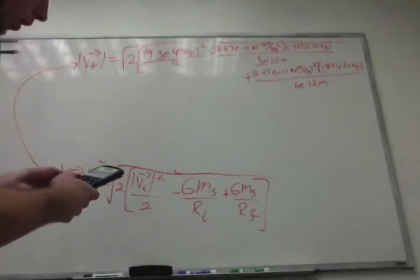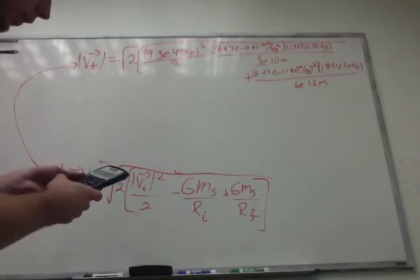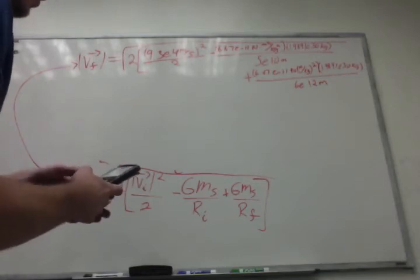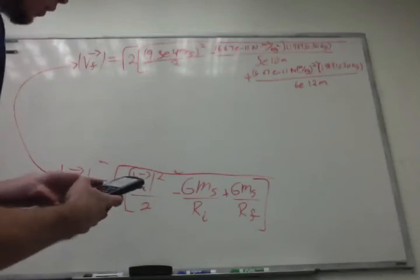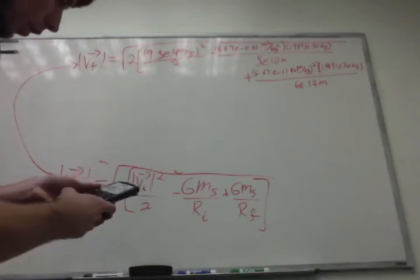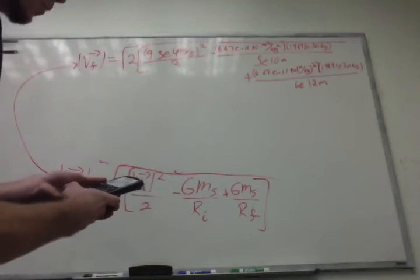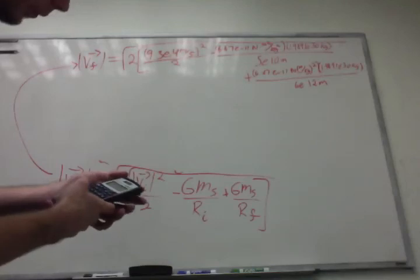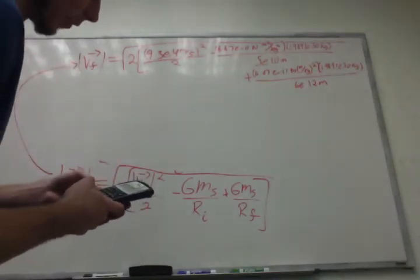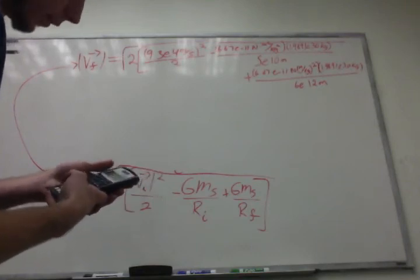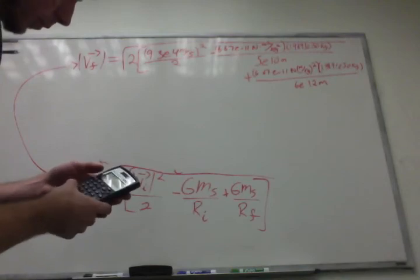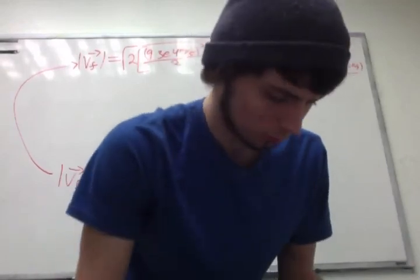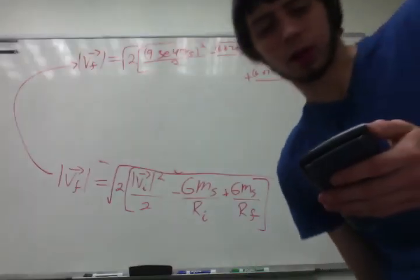2 minus 6.67×10^-11 times 1.9891×10^30 divided by 5×10^10 meters plus 6.67 blah blah blah. And you can skip this part if you're going to do the calculation on your own. That's basically all I'm doing, all I have left to do, add times 2.